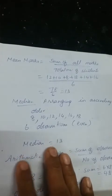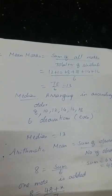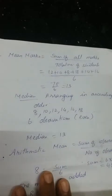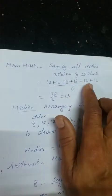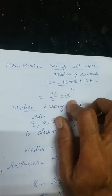The second and third ones you can do as homework. Now the fourth one — find the mean and median of the marks given. For mean: sum of observations divided by 6 = 78 by 6 = 13.